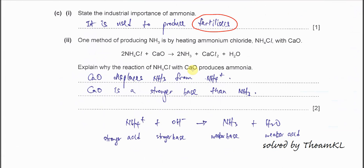Part 2: One method of producing ammonia is by heating ammonium chloride with calcium oxide. So this is the equation: ammonium chloride with calcium oxide forms ammonia, calcium chloride and water. Explain why the reaction of ammonium chloride with calcium oxide produces ammonia. If you just look at the answer actually it's kind of quite hard to get it. It's better to use a simple example to link this reaction.